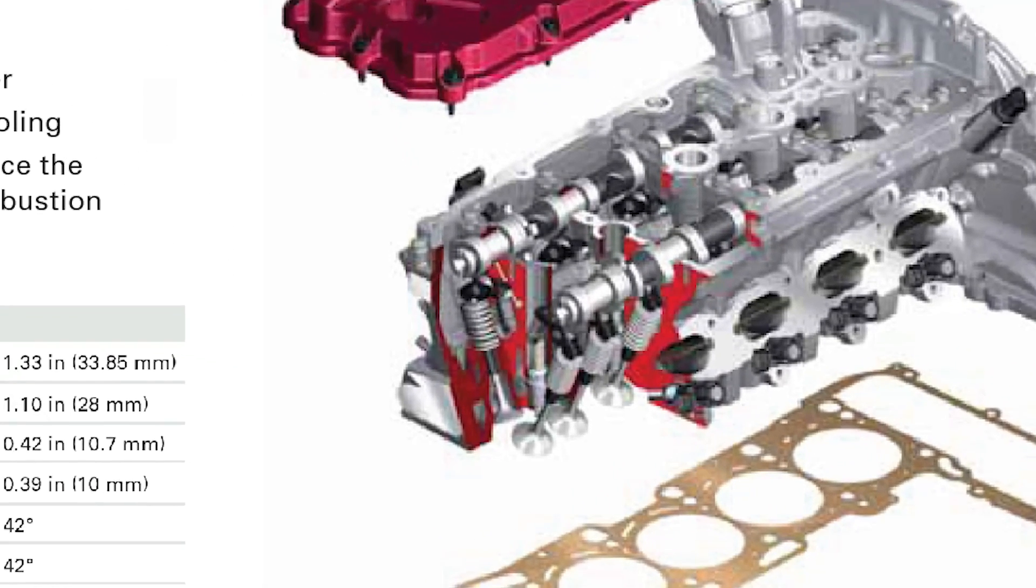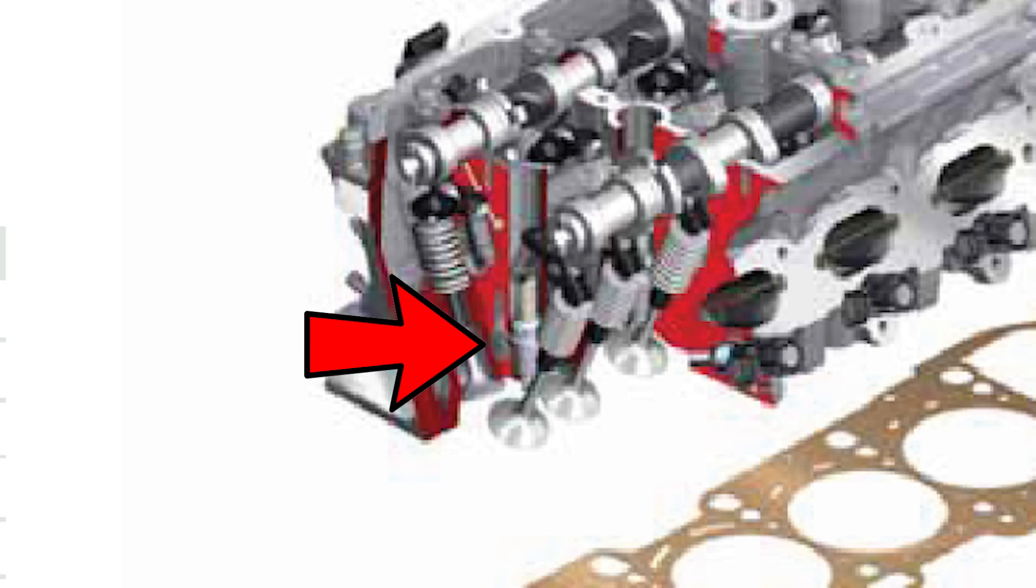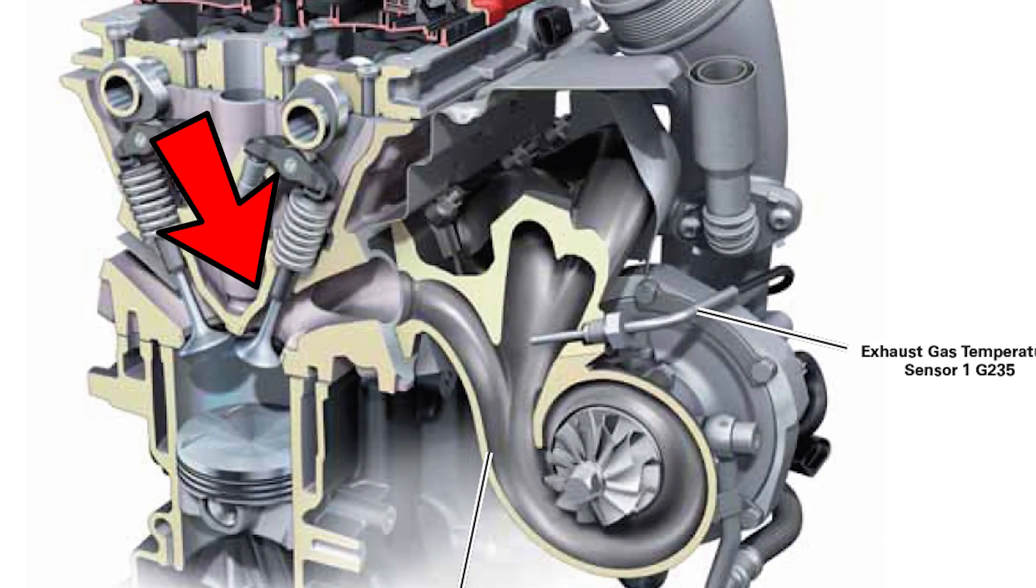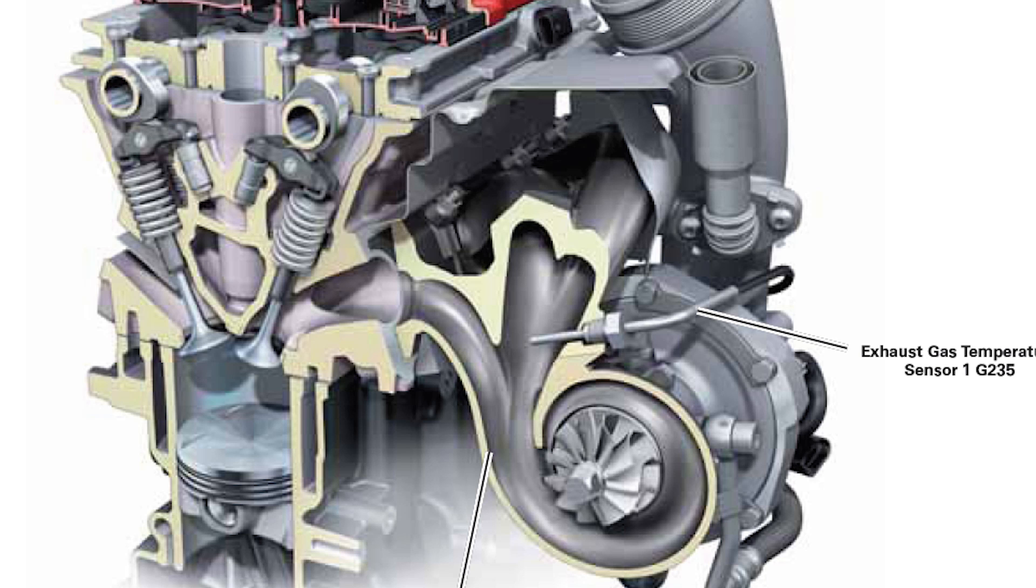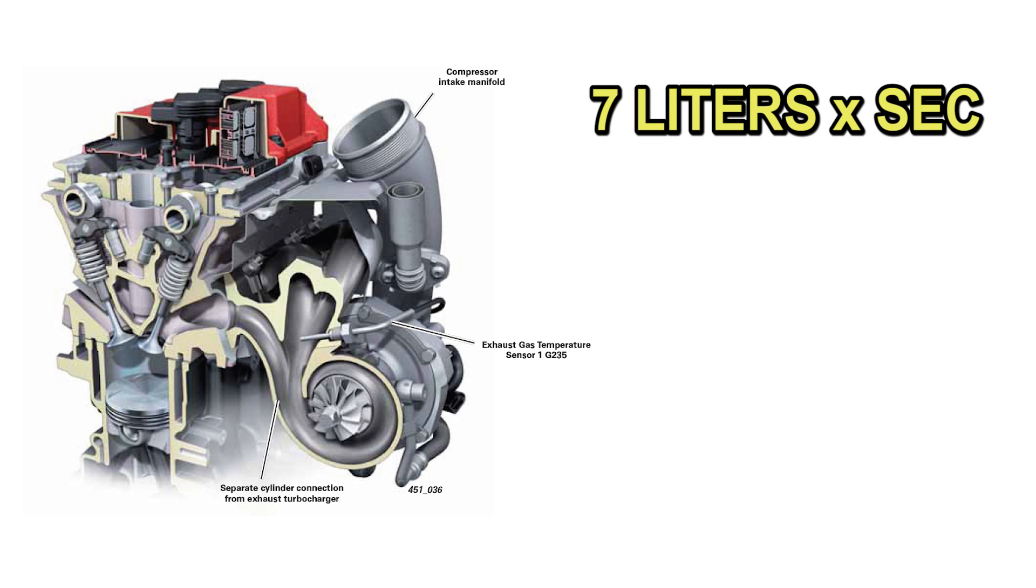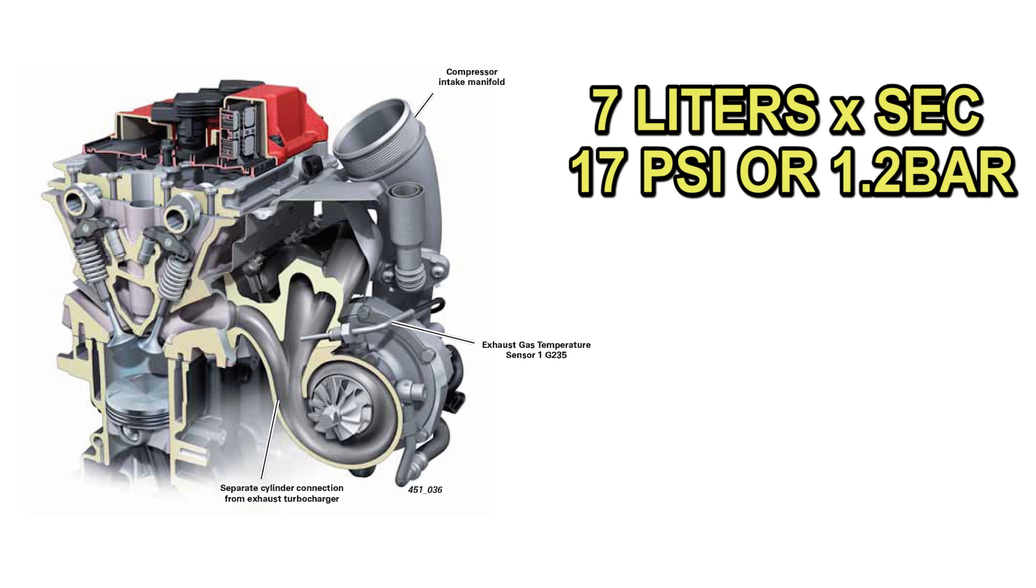The water passages that circulate through the cylinder head were enlarged around the spark plug to extract more heat. The valves are sodium-filled to extract the heat generated by turbocharged combustion. The exhaust valve seats are tempered. The intake ports were redesigned for direct injection with better turbulence. The upper part was modified for the installation of the high-pressure fuel pump. The turbo is a BorgWarner K16 modified at Audi's request with the capacity to compress 7 liters of air per second at 17 psi or 1.2 bar.